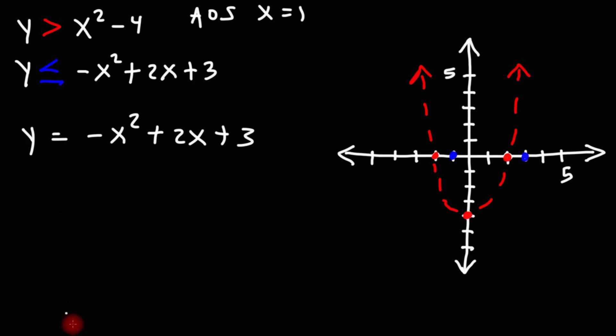So what I'm going to do is I'm going to find the coordinates of the vertex. I'm going to plug in 1 into this equation. So this is going to be negative 1 plus 2 plus 3. 2 plus 3 is 5 minus 1. That's 4.